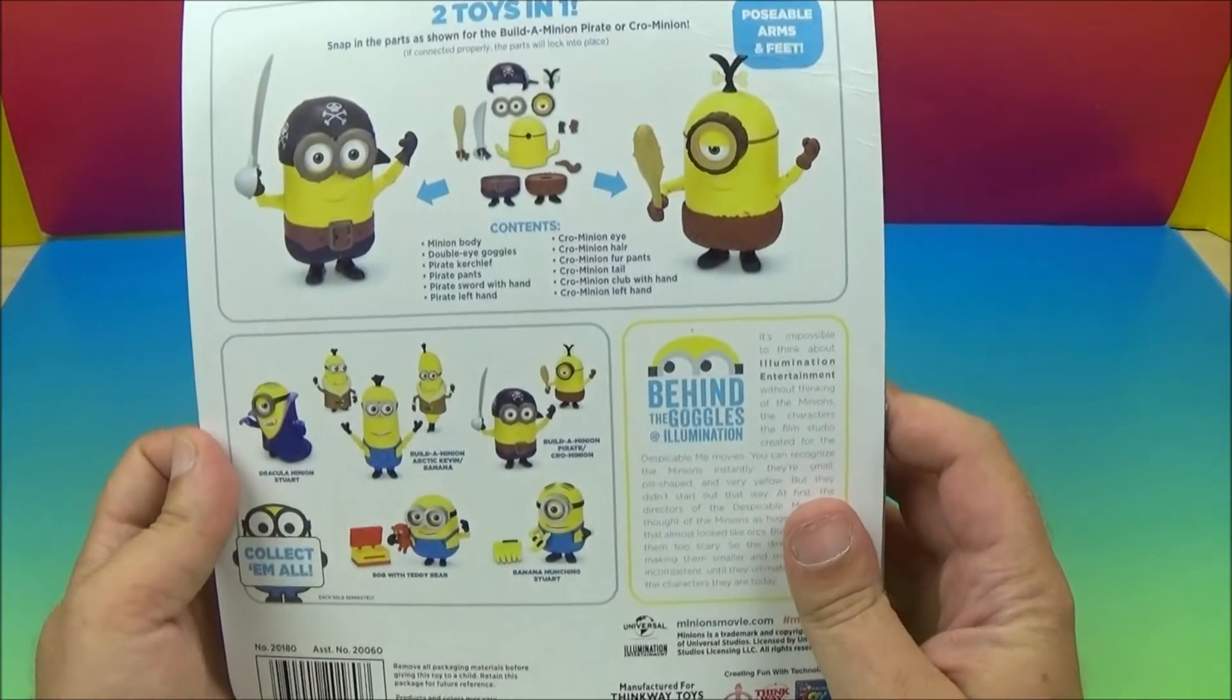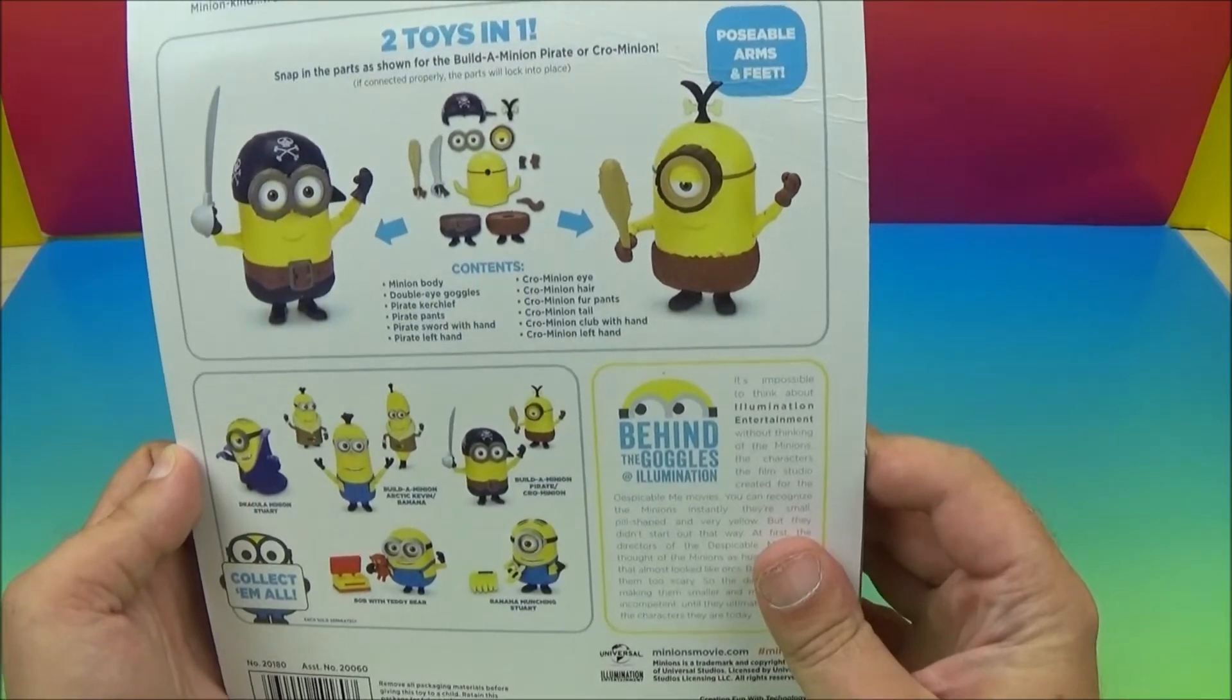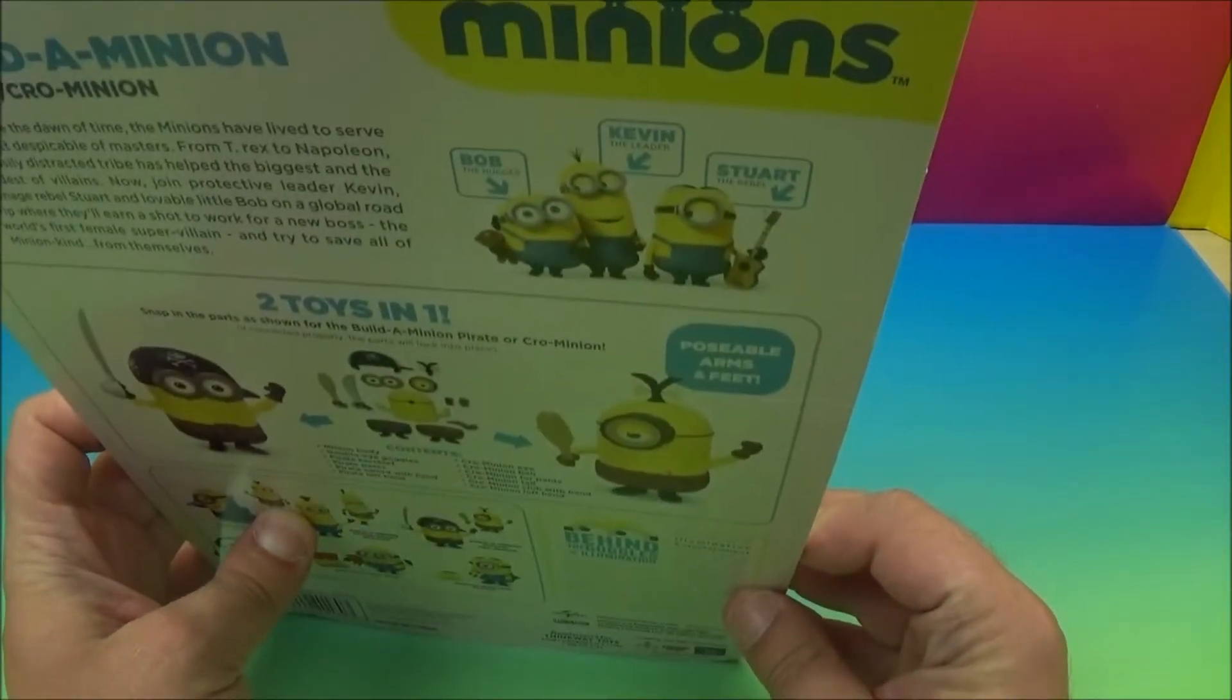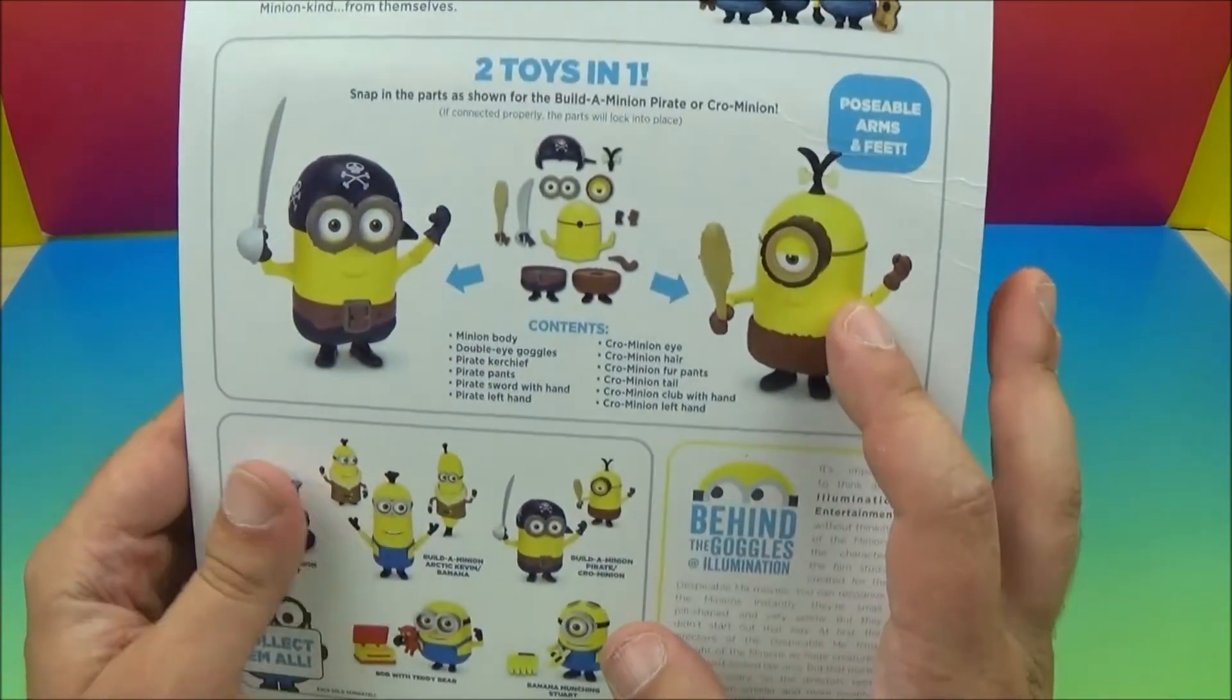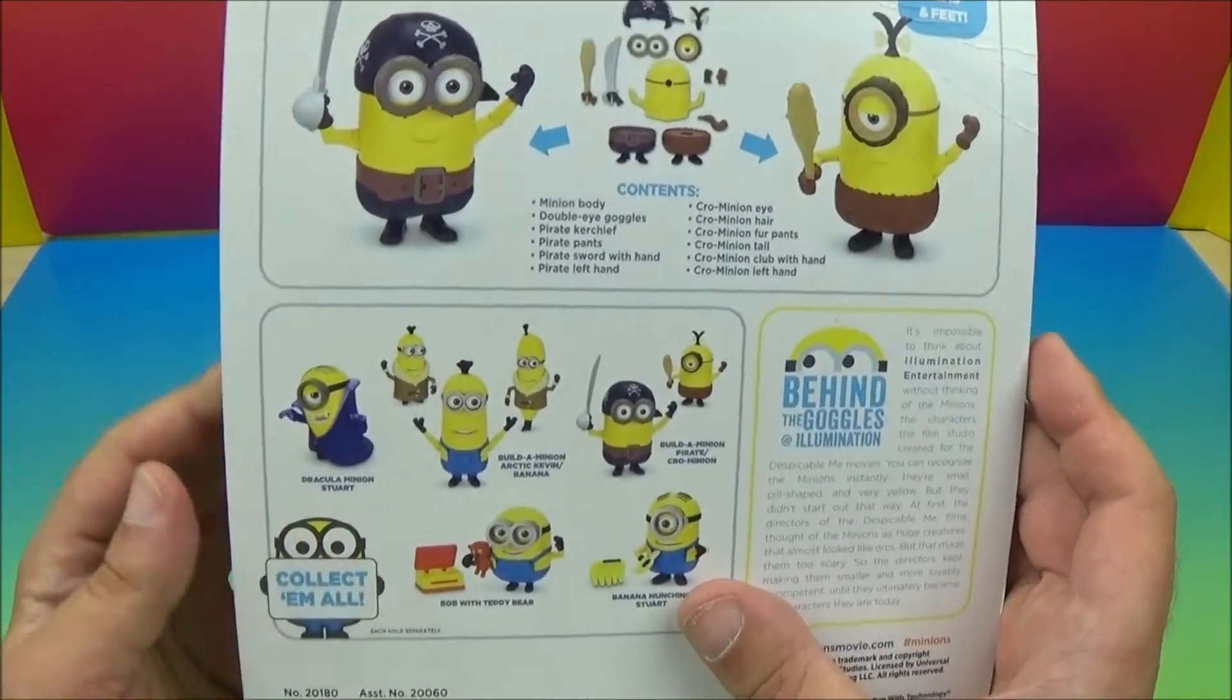Wow, I absolutely love this one. So we've got Bob the Hugger, Kevin the Leader, Stuart the Rebel up top there. Poseable arms and feet. So he switches from the Pirate to the Crow Minion. Of course, there's collect them all at the bottom.